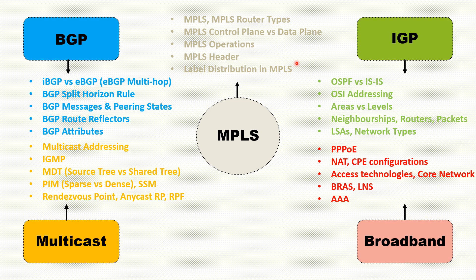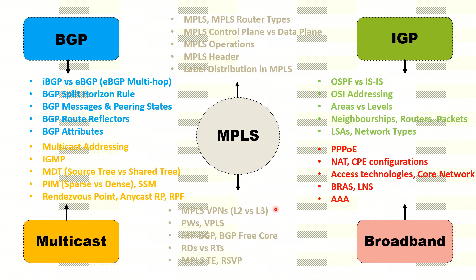The most common services that service providers run using MPLS are MPLS VPNs — a topic asked in every interview. You should know the difference between Layer 2 MPLS VPNs and Layer 3 MPLS VPNs. You should know about VPLS, which is a shared LAN Layer 2 VPN, and pseudowires, which are point-to-point connections created using cross-connects. You should also know about MP-BGP, why it is required, what function it serves in an MPLS VPN, and what BGP-free core means.